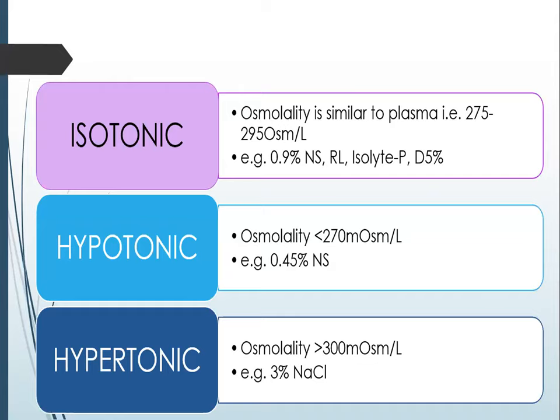IV fluids can be divided into isotonic, hypotonic, and hypertonic fluids. Isotonic fluids have an osmolality similar to plasma, that is 275 to 295 milliosmol per litre. A few examples of isotonic IV fluids are 0.9% NS, Ringer's lactate, dextrose 5%, and Isolyte P.